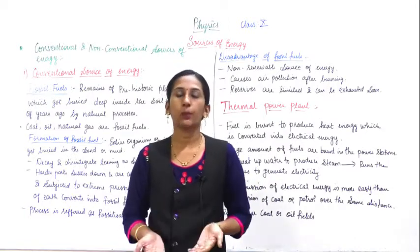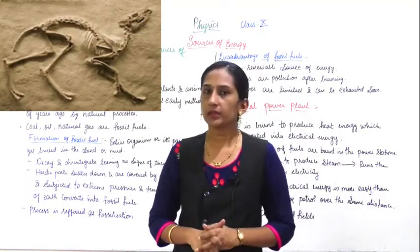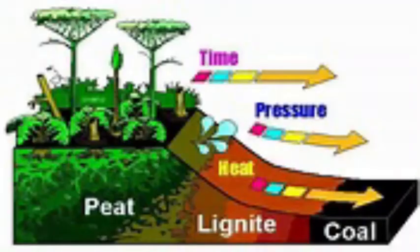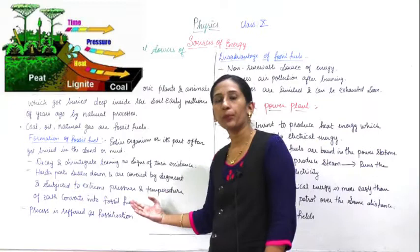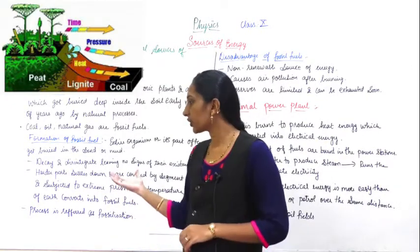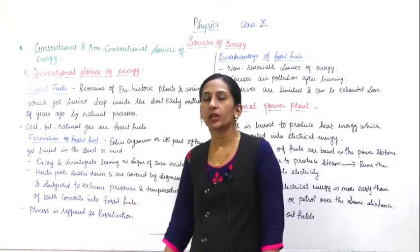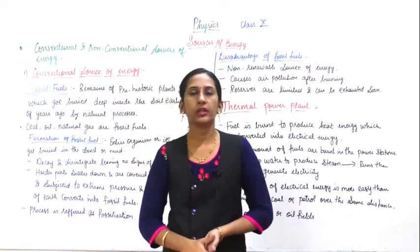When it gets buried, it will start decomposing and disintegrates into the soil. As you know, animals have bones — the harder parts of the body — and these harder parts get settled down and are covered by sediment. As we go deep into the earth, the temperature increases, and because of such extreme temperature and pressure, the bones or harder parts of the animals get converted into fossils. This process of converting the remains of plants and animals into fossil fuel is called fossilization.